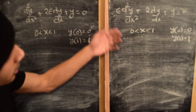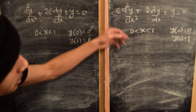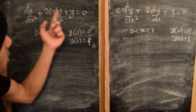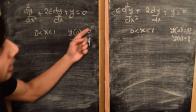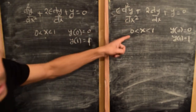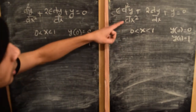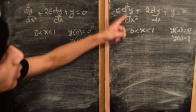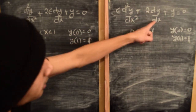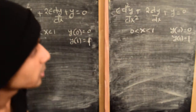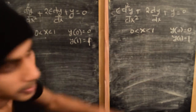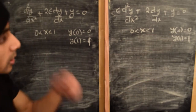On the right-hand side, we have the same equation except that the small parameter instead of multiplying dy/dx is actually multiplying the term with the highest derivative. So we have epsilon times d²y/dx² plus 2 dy/dx plus y equals 0, with the same spatial extent from 0 to 1 and the same boundary conditions.